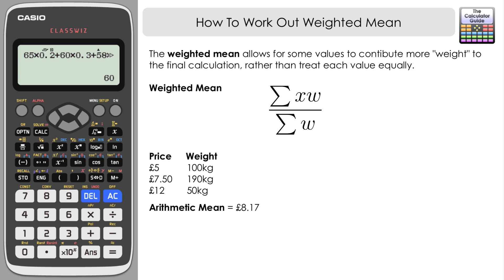Once again I'm going to show you two different ways you can do that. We're going to use the formula as we did before first. It's the sum of XW so it's 5 times 100, plus remember it's sum, 7.5 times 190 plus 12 times 50. Then on the bottom we want the sum of the weight. We can let the calculator work the sum out for us so let's just put our weights in: 100 plus 190 plus 50. Then press equals and we've got a fraction in the first instance.